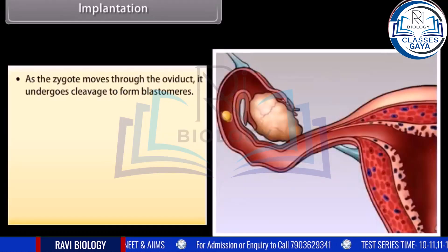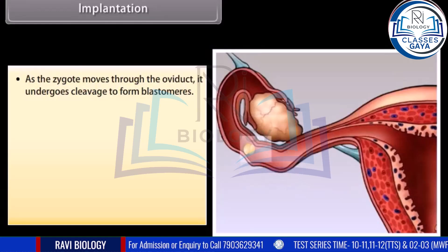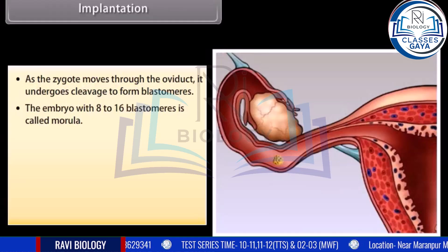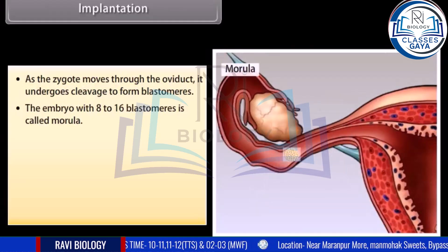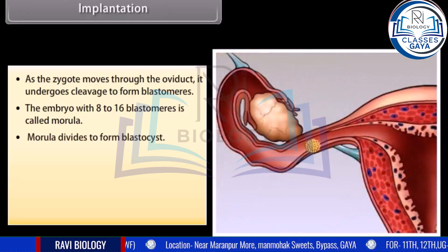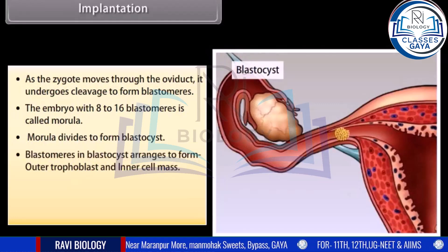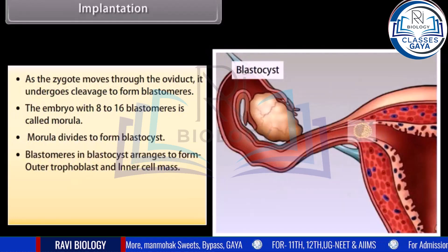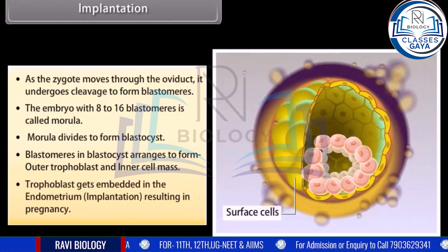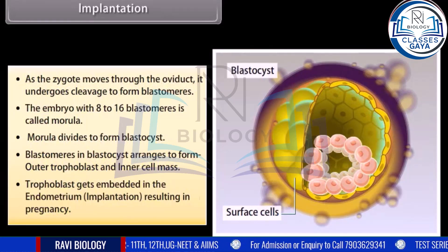As the zygote moves through the oviduct, it undergoes cleavage to form blastomeres. The embryo with 8 to 16 blastomeres is called a morula. The morula divides to form a blastocyst. Blastomeres in the blastocyst arrange to form an outer trophoblast and an inner cell mass. The trophoblast gets embedded in the endometrium through implantation, resulting in pregnancy.